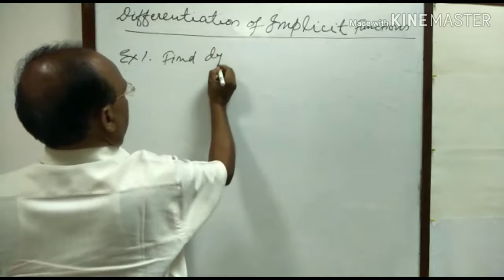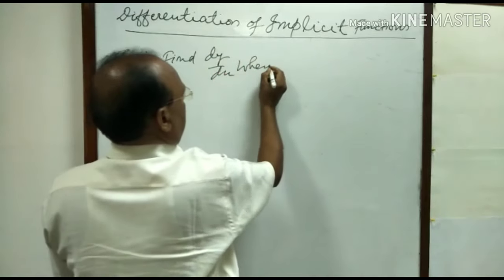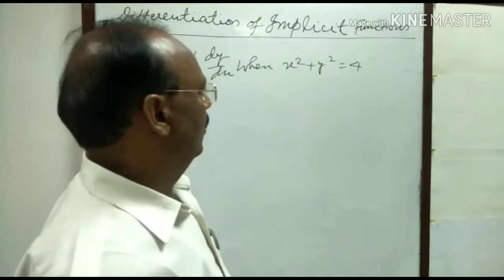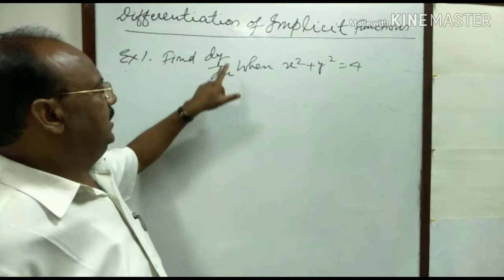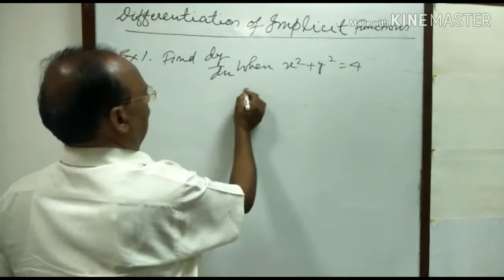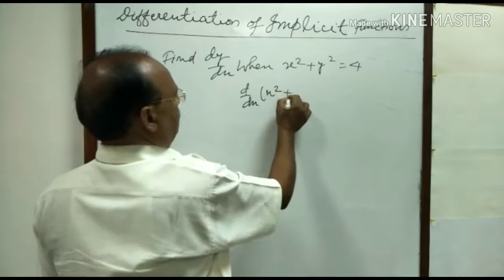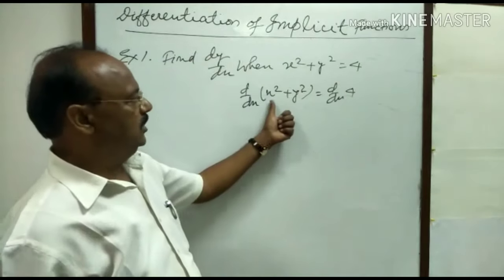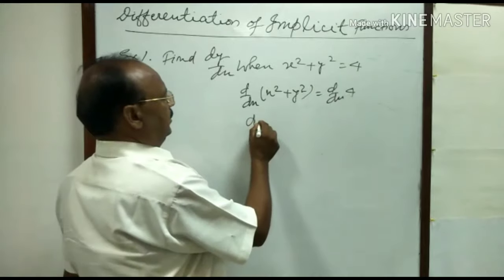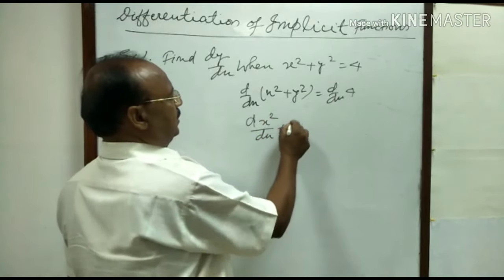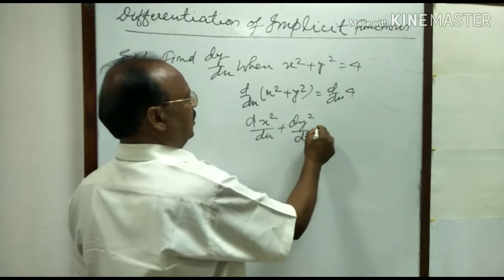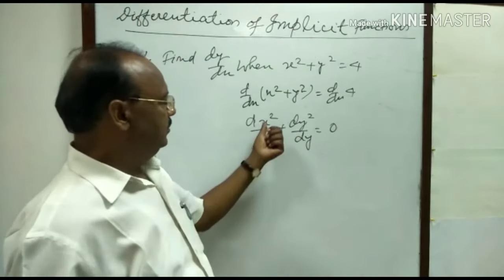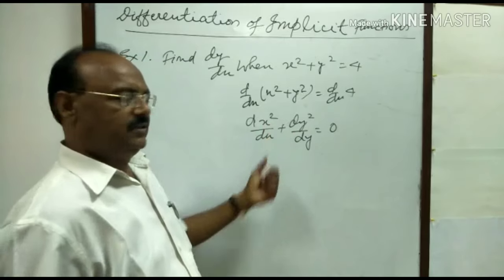Find derivative of y with respect to x when x square plus y square is equal to 4. So we have to find dy/dx. So d/dx of x square plus y square is equal to d/dx of 4. These two terms will be differentiated separately. Derivative of x square with respect to x is 2x. Derivative of the constant 4 is 0.